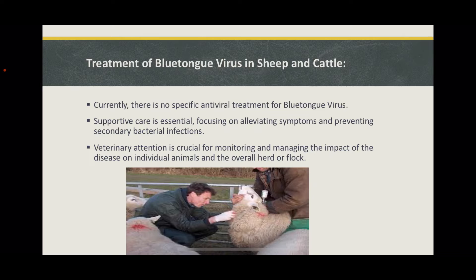Vaccination is a critical component of preventing blue tongue virus infections. Vaccines are designed to stimulate an immune response that provides protection against specific BTV serotypes prevalent in the region. Timely and routine vaccination is essential for building immunity within livestock populations. Economic decisions regarding the treatment of BTV often involve balancing the cost of supportive care, vaccination programs, and potential losses in productivity. Long-term strategies may focus on implementing effective vaccination protocols and biosecurity measures to reduce the overall impact on livestock health and industry economics.